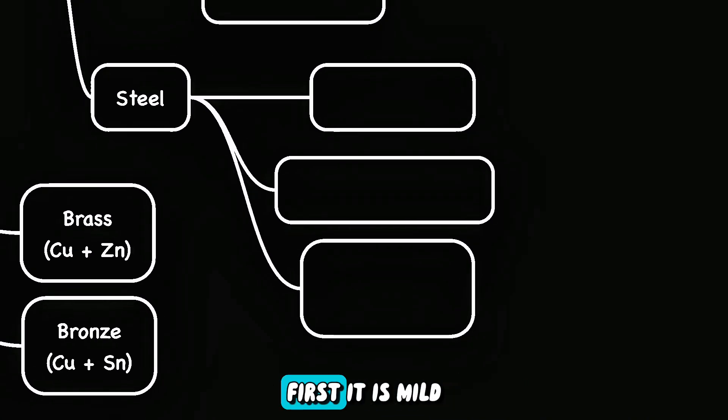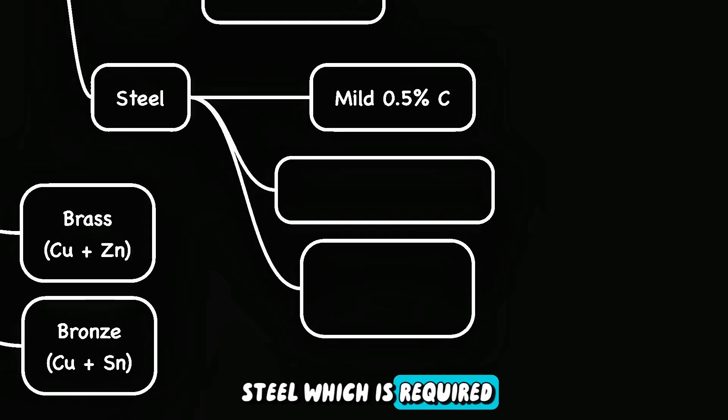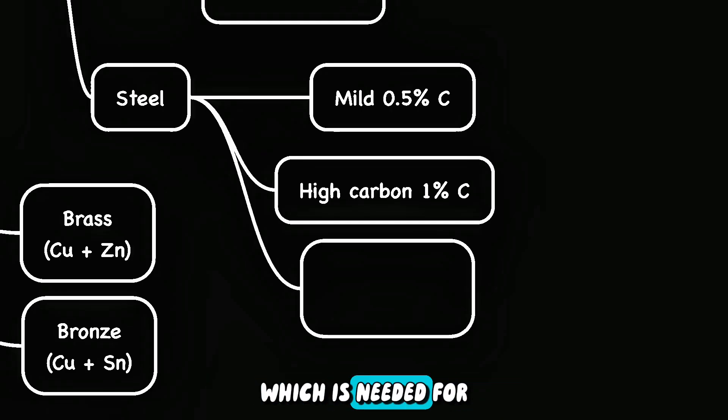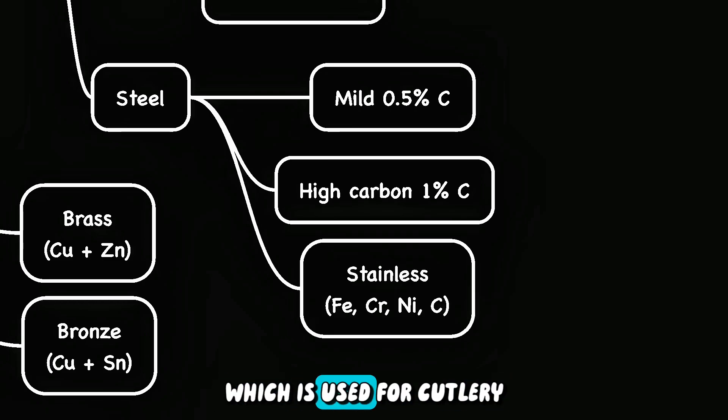Steel falls into three types. First, it is mild steel, which is required for car bodies. Second is high carbon steel, which is needed for cutting tools. And last is stainless steel, which is used for cutlery.